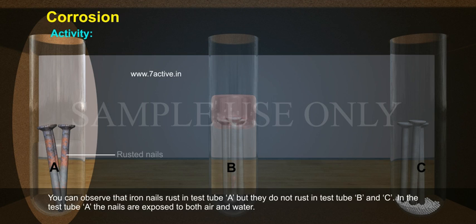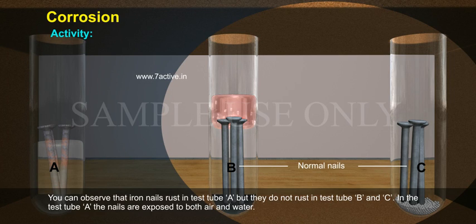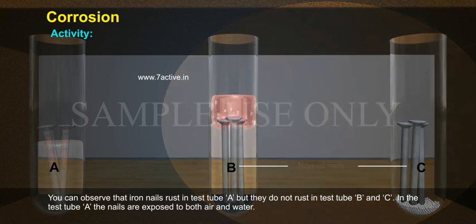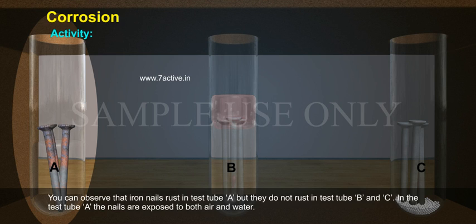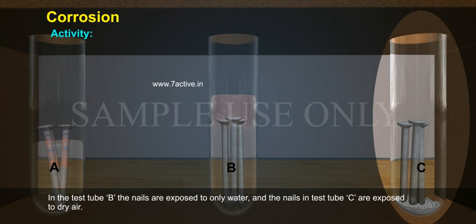You can observe that iron nails rust in test tube A but do not rust in test tubes B and C. In test tube A, the nails are exposed to both air and water. In test tube B, the nails are exposed to only water, and the nails in test tube C are exposed to dry air.